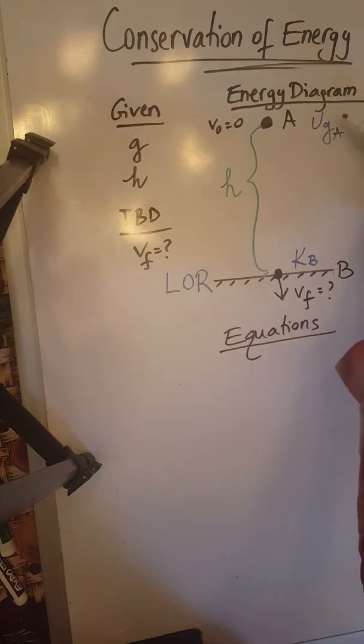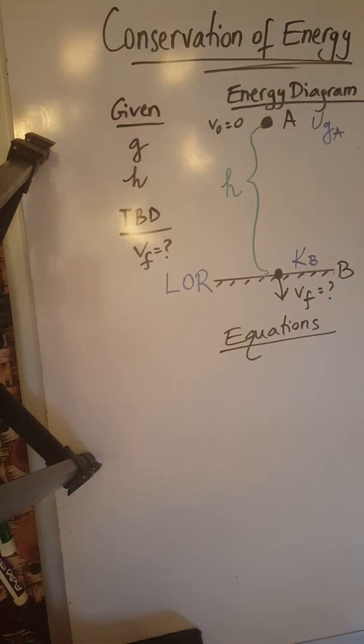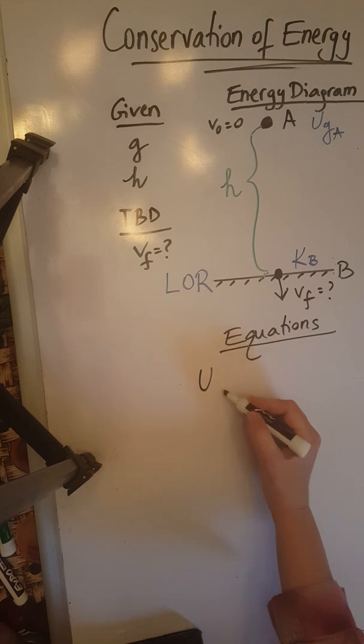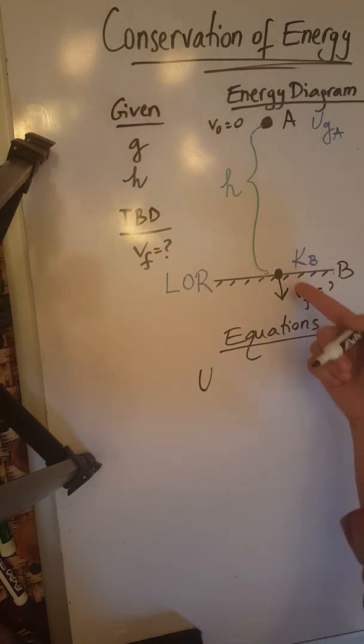So at point A we have gravitational potential energy. At point B we have kinetic energy. So according to the strategy we are just going to set those two energies equal to each other. By the way this is our energy diagram.